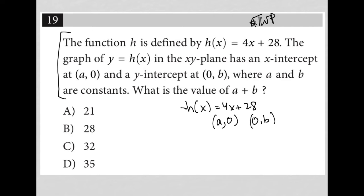Can I figure out what the x-intercept and the y-intercept are from this function? I definitely can. The easiest one to find is the y-intercept. This function is written in slope-intercept form, which is y equals mx plus b, where b is the y-intercept. So we know b is equal to 28.